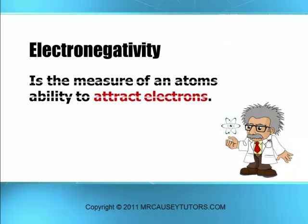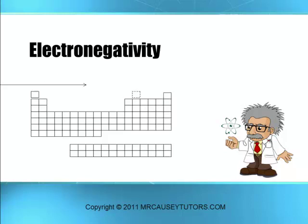Electronegativity is the measure of an atom's ability to attract electrons. It's going to increase as you go across and increase as you go up the periodic table. Fluorine wants electrons and so it attracts electrons. In fact, fluorine is the highest electronegative element there is.